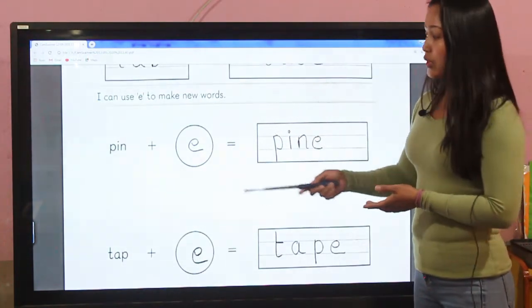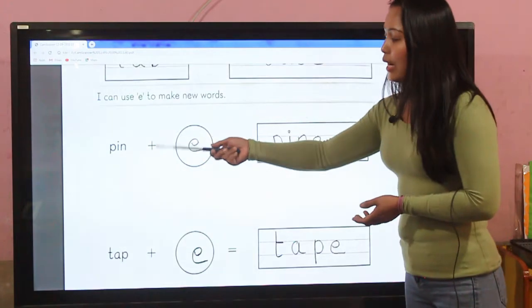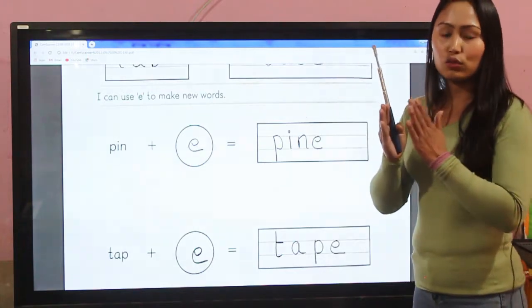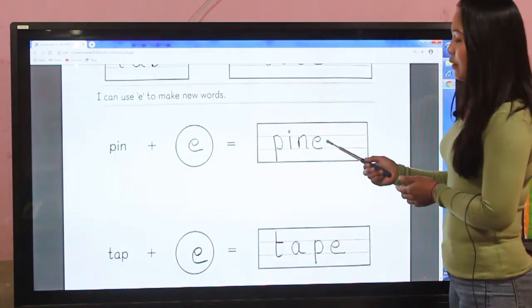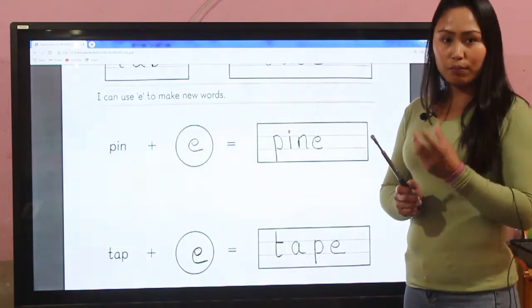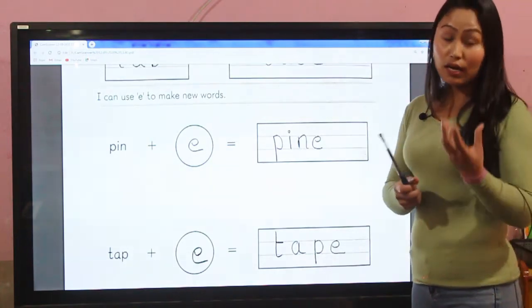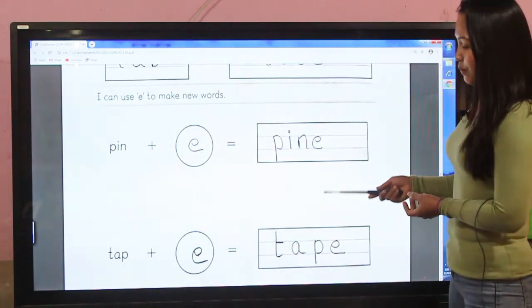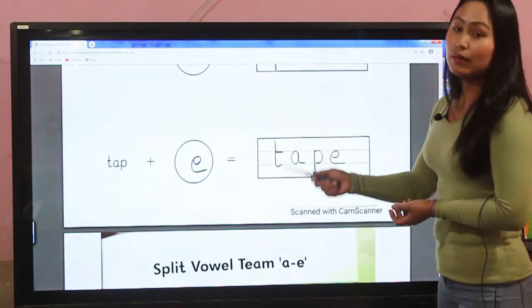I can use e to make new words. P-i-n pin plus e - when we add e at the back, pin becomes pine which has a different meaning. Similarly, t-a-p tap plus e becomes tape.